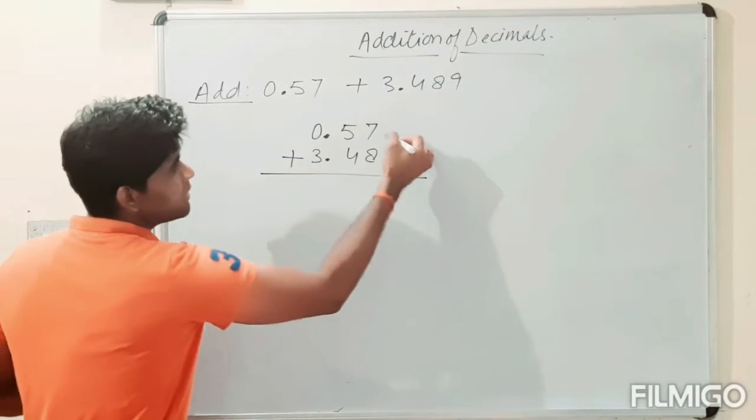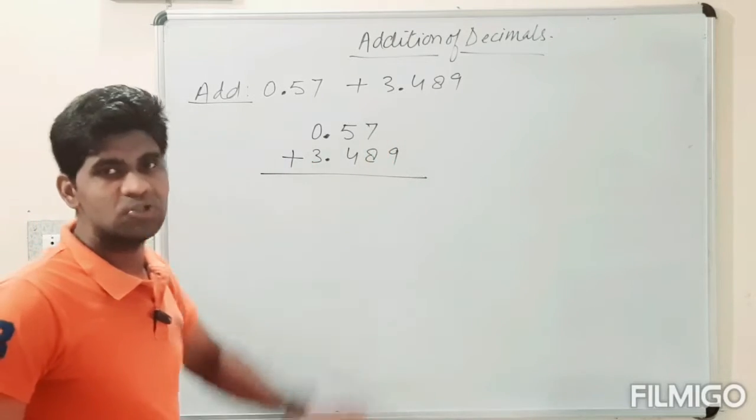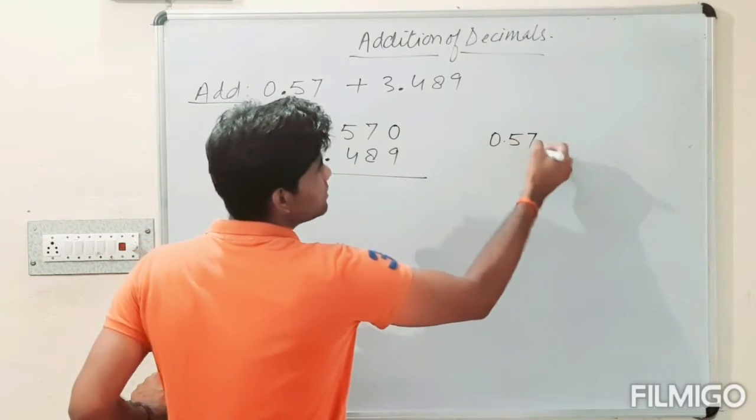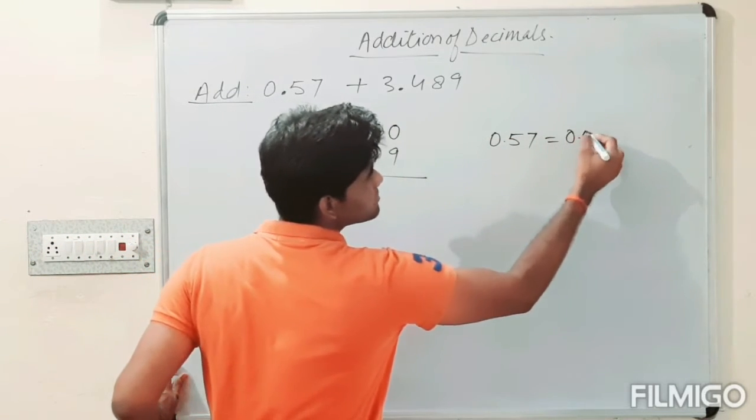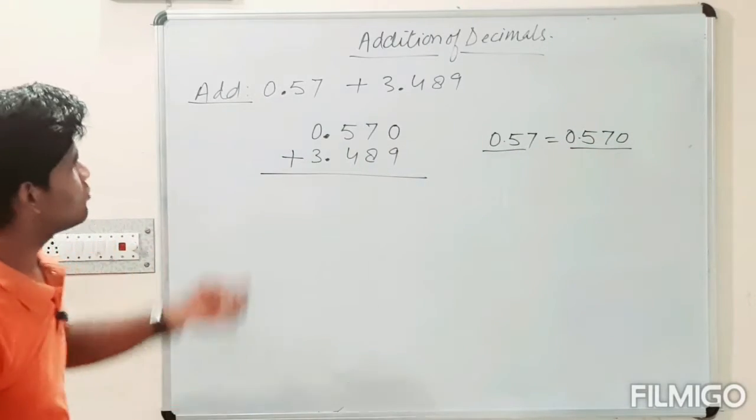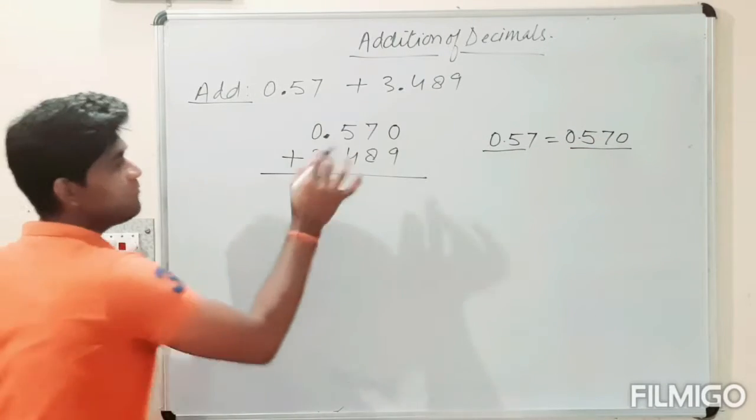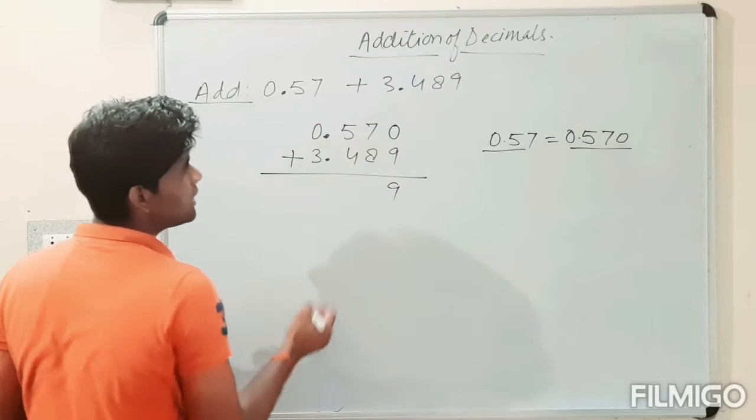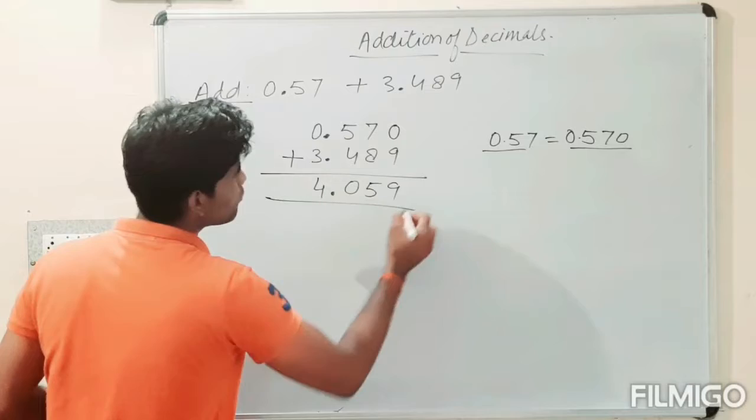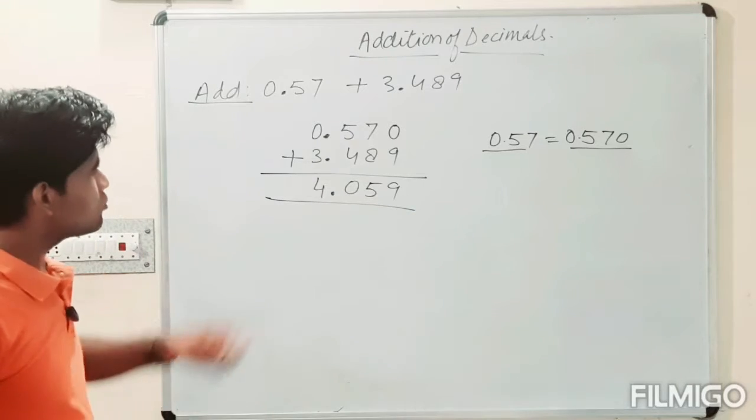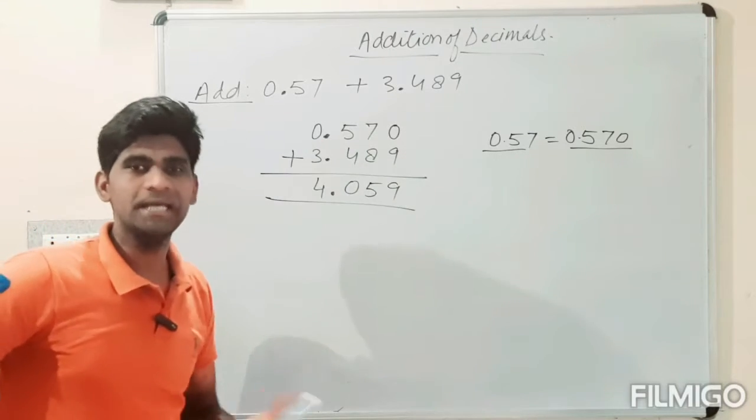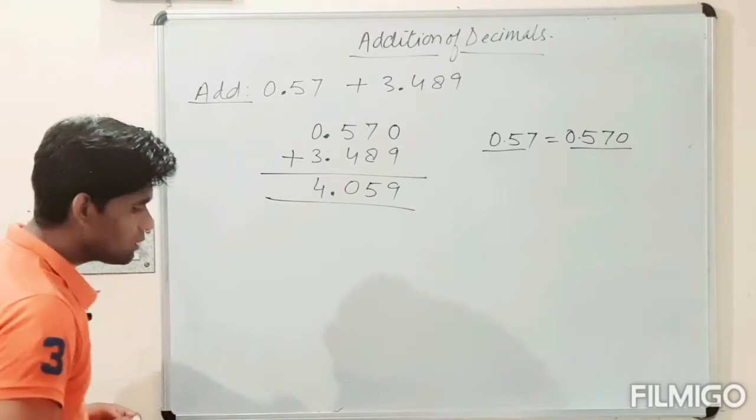Then look, here above 9, there is no number. We will consider it 0. Look, 0.57 will be equal to 0.570. These are equivalent to each other. So it is the required decimal number which we have got after adding these two decimal numbers.